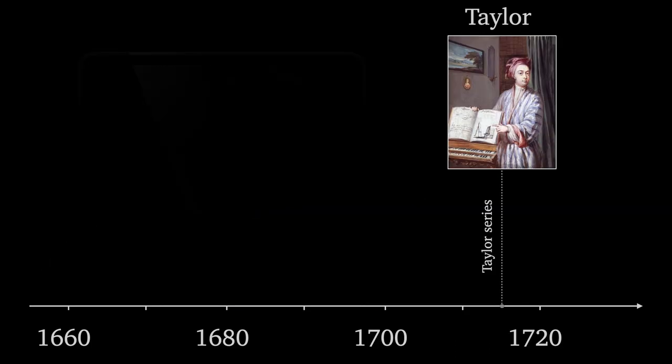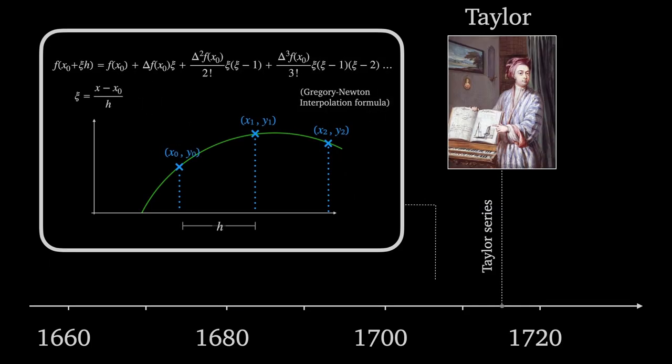I wanted to mention that when Taylor discovered his series over 20 years later, his idea was motivated by the Gregory Newton interpolation formula and its limit as h tends to 0.